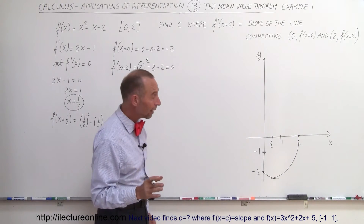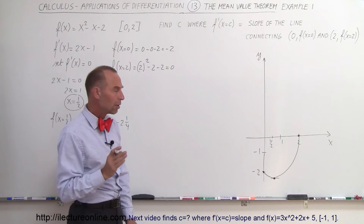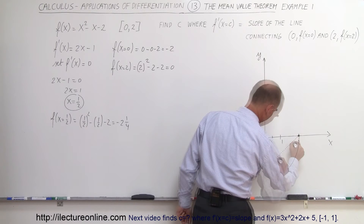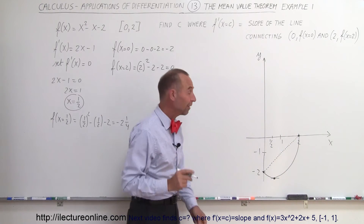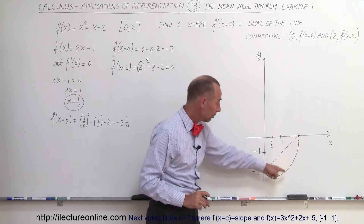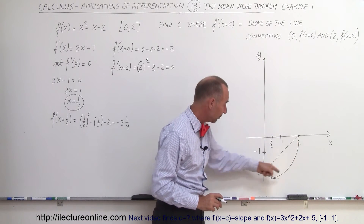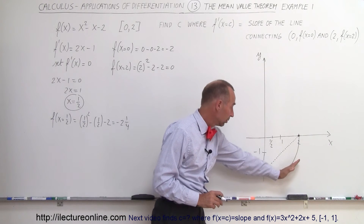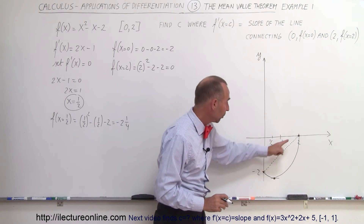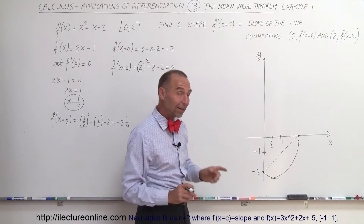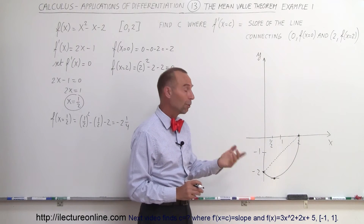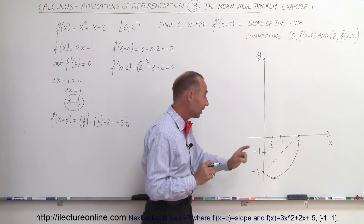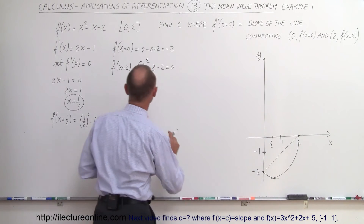Now we're ready to apply the mean value theorem. If we draw a line between those two endpoints, we get this line right here. The mean value theorem claims that there must be some point on the graph of the function where, when we take the derivative, we get the same slope as the slope of the line between those two endpoints. Let's find that slope and then set the derivative equal to it to find x.